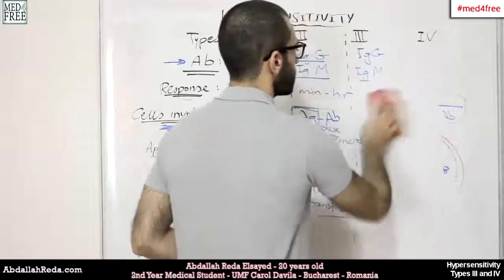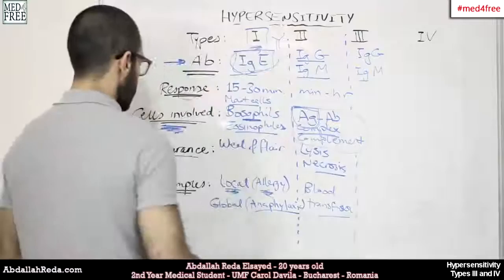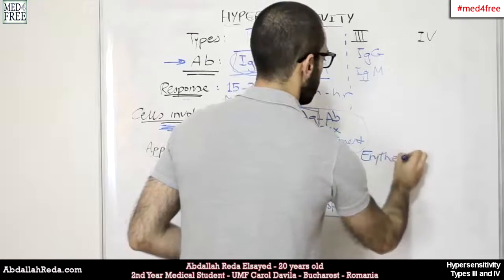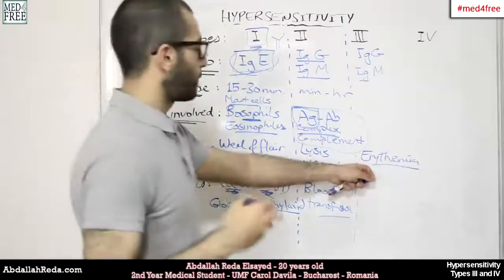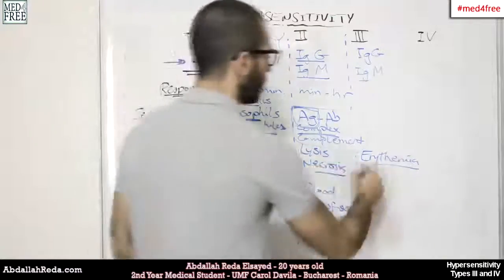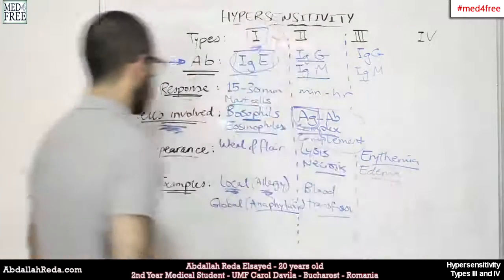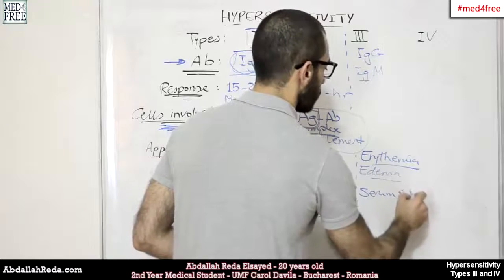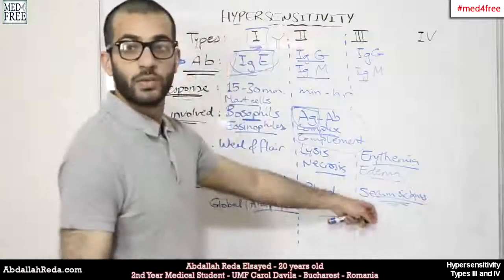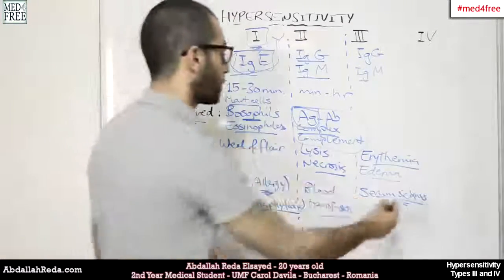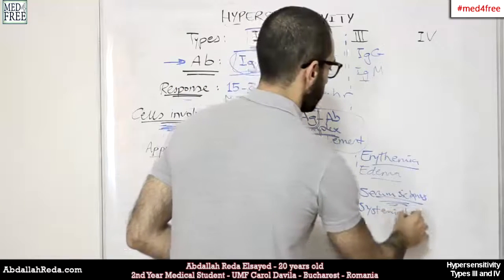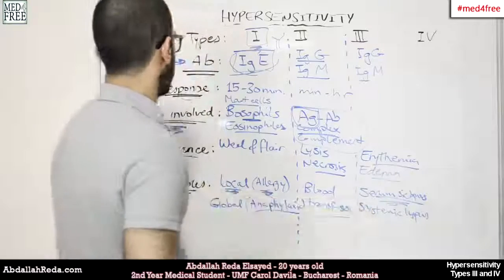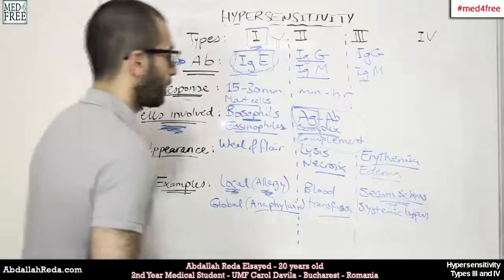What this kind of hypersensitivity looks like is we have erythema — erythema is the redness of the skin — and in some cases we would also have edema. An example of that is serum sickness, which is an allergic reaction to a serum. We would have redness of the skin all over the body, or systemic lupus, where the redness of the cheeks is very obvious.